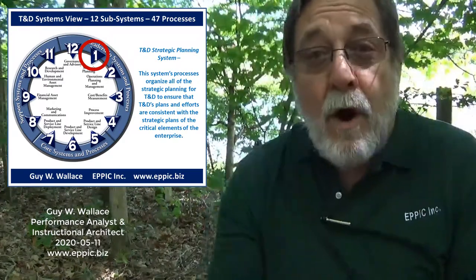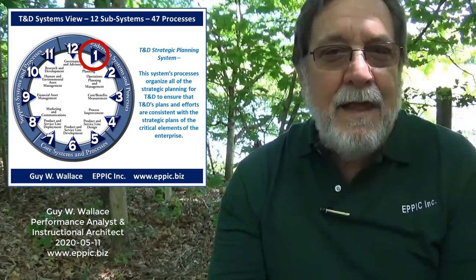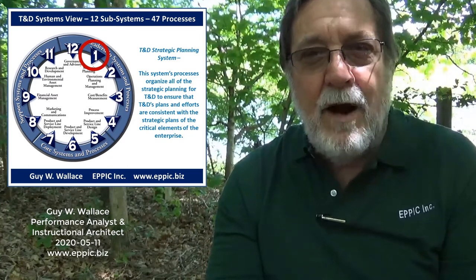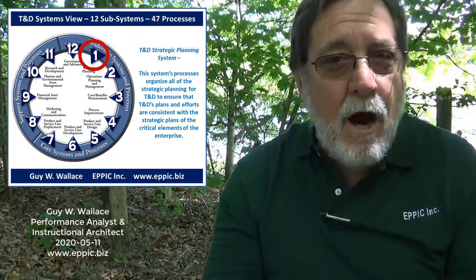At 1 o'clock is the Training and Development Strategic Planning System, comprised of two components. The first is the enterprise strategic plan surveillance process — before developing your own strategic plan, go look at the customers you serve and figure out where their strategic plans are going, because that's how you get aligned strategically and support their initiatives. Training and development exists to support the core mission of the enterprise — it is the tail, not the dog that does the wagging. Part two is the Training and Development Strategic Planning Process, informed by where the rest of the organization is going.